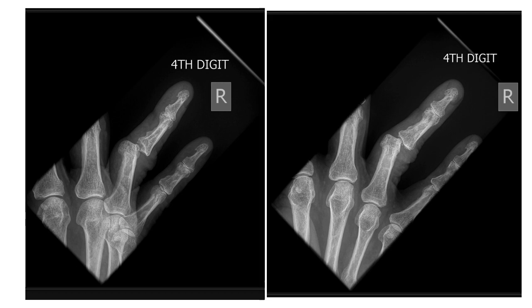Here we have a typical case of interphalangeal joint dislocation. It is common in the proximal interphalangeal joint, and it is due to collateral ligament injury or tear. Its mid-substance can be associated with an avulsion fracture. In the classification of interphalangeal joint dislocation, we have the dorsal type, which is the most common one.